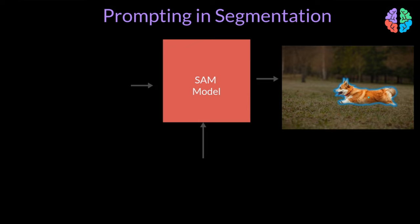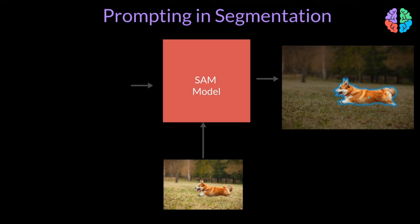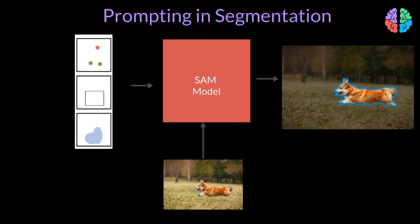Unlike language models, imaging models are special — they take images as input. So how can we prompt a segmentation model? The prompt can be a number of things: ranging from simple points on a given canvas indicating where to segment in a given input image, or it can be one or more bounding boxes, or even a rough drawing on a canvas indicating what to segment in the input image.